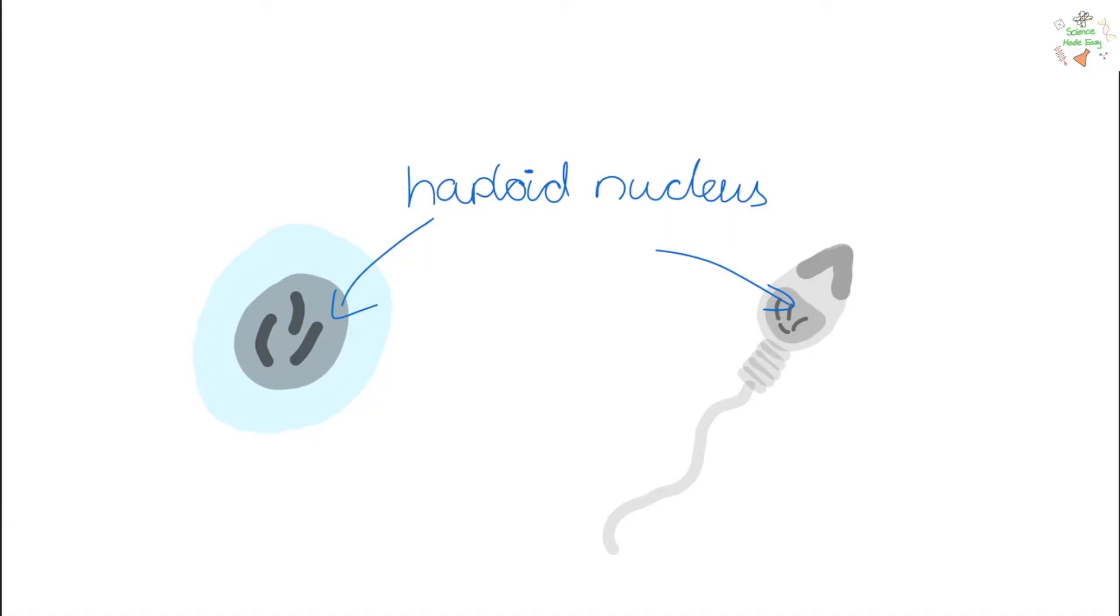The sperm and the egg cell are both specialised cells. These are the gametes or the sex cells. They both have a haploid nucleus. This means they have half of the number of chromosomes as a normal body cell, so they have 23 instead of 46. This is so that when they fuse together they have the full number of chromosomes.